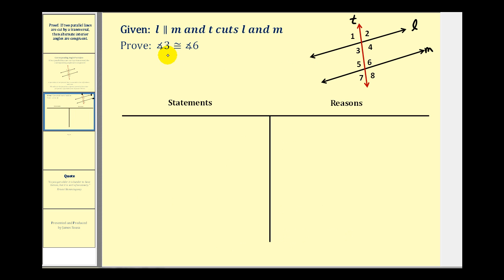Here we're given that lines L and M are parallel, and line T cuts L and M. We want to prove angle three is congruent to angle six. Notice angle three and angle six are alternate interior angles.